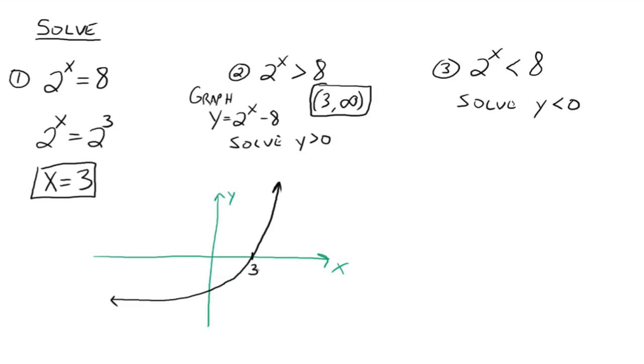So looking at your graph here, we're saying what x values give us y values that are less than 0? Or where's your graph below the x-axis? Well, everybody see it's from negative infinity until we get to 3? 3 is not included. This interval, negative infinity until we get to 3, your graph's below the x-axis.